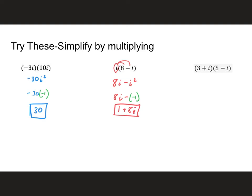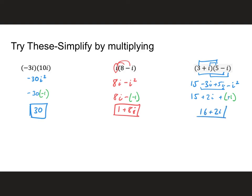Last one: I must FOIL. Firsts, outsides, insides, lasts. Combining like terms, I get plus 2i. I change i squared to negative 1, so that's minus negative 1. 15 minus negative 1 is the same as adding the opposite, giving me 16. Final answer: 16 plus 2i.